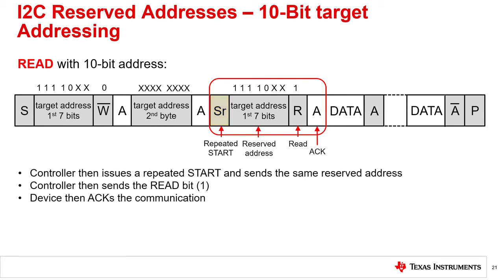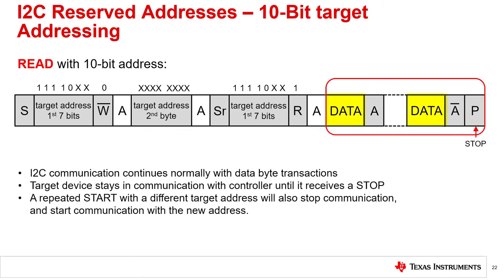To read from this device, the controller then sends a repeated start. This is followed by the reserved address that was just used. Then the read bit is sent, followed by an acknowledge. Because the read bit is sent and not the write bit, the device that just acknowledged this communication understands that this is a read. Other devices with the same reserved address do not respond. The addressed device then acknowledges this repeat of the reserved target address. After the addressed device sends the acknowledge, data is transmitted by the device, and after each byte, the controller acknowledges the data. This data transmission continues until the controller sends a stop condition, or a repeated start, followed by a different target address.